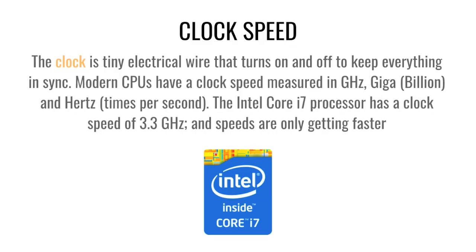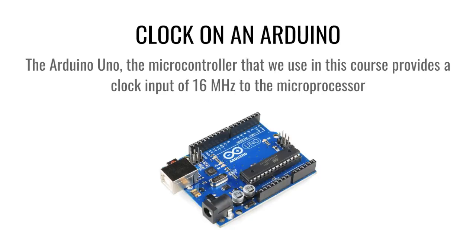Let's start with the clock. The clock is a tiny electrical wire that turns on and off — it keeps everything in sync. Modern clock speeds are measured in giga, so you're looking at billions of cycles per second, which is pretty impressive. The hardware for this course, the Arduino, has a clock speed of 16 megahertz, still pretty impressive.